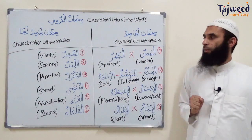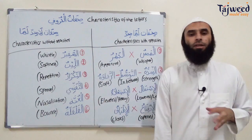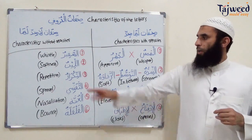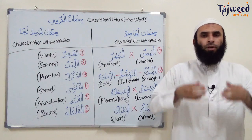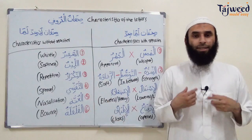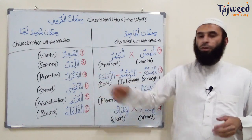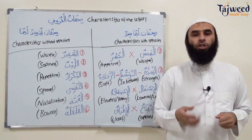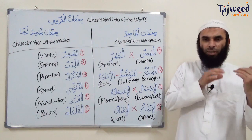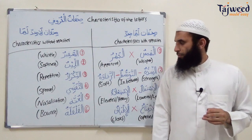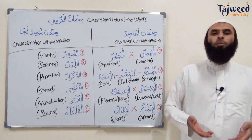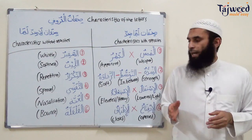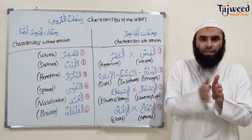Now Sifat Laadid — characteristics that do not have opposites. Number one is al-Safir: three letters that naturally produce a whistling sound when pronounced. We have al-Lin: two letters that in a certain situation are pronounced with softness, without pressure on the lips. We have al-Tikrar, meaning repetition — the only Sifat we're told not to do; if a certain letter is not pronounced properly, we'll be repeating it. We have al-Tafashi: a letter with the characteristic of spreading. And al-Ghunna: two letters that produce a nasalization sound flowing through the nasal passage. And al-Qalqala: letters that have a bouncing effect when stopped.